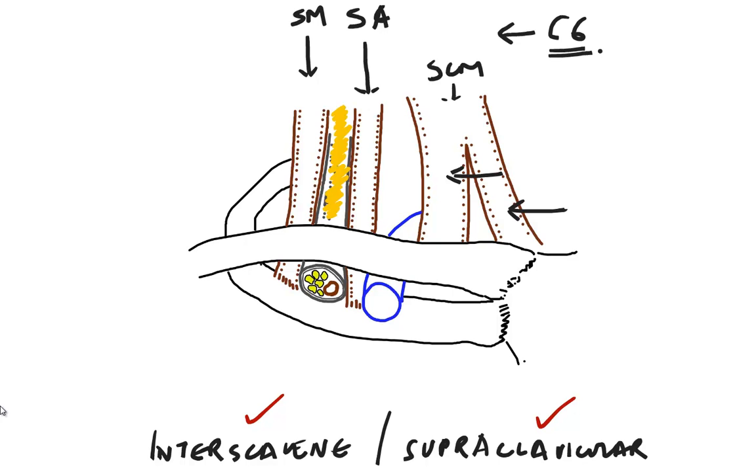The brachial plexus forms from the roots of C5, C6, C7, C8, and T1. As it goes down, it forms from roots to trunks to divisions and cords.